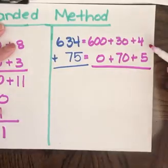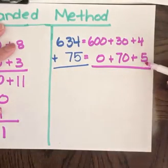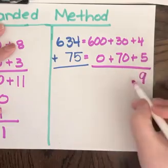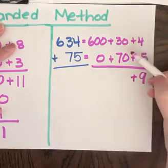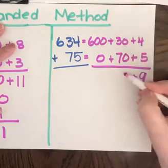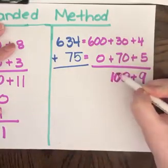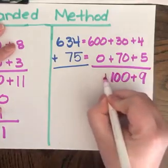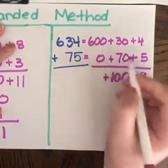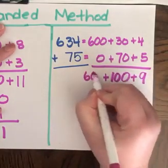Then again we start with our ones. When we add, we have 4 plus 5. That gives us 9. We have 0 plus 0 is 0. 3 plus 7 is 10. So I'm going to write 10. Then we have 600 plus 0, which equals 600.